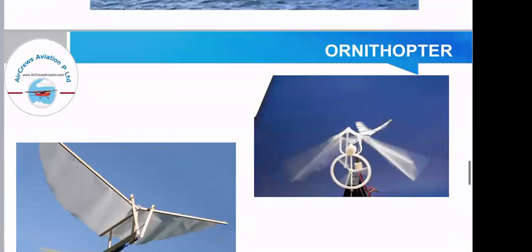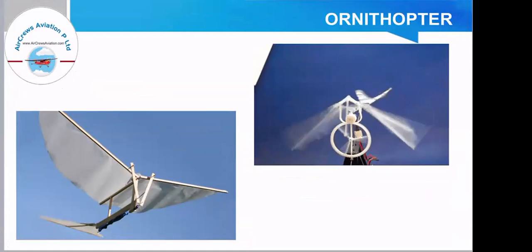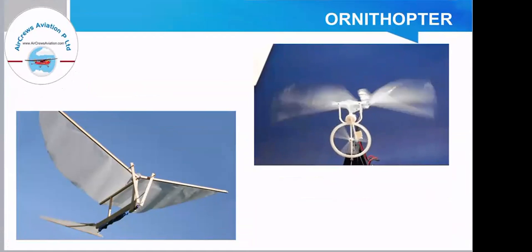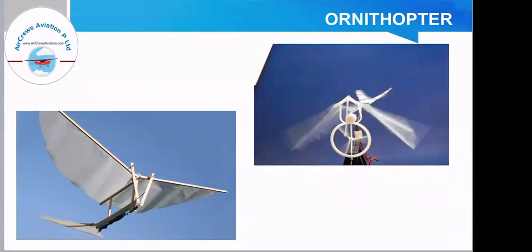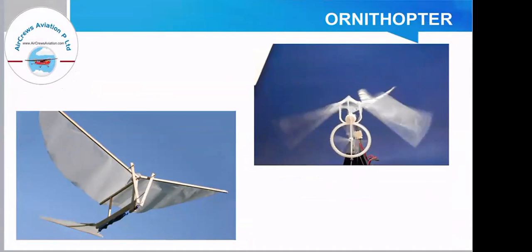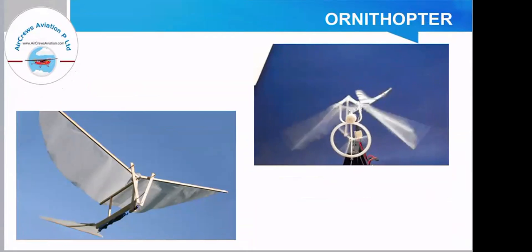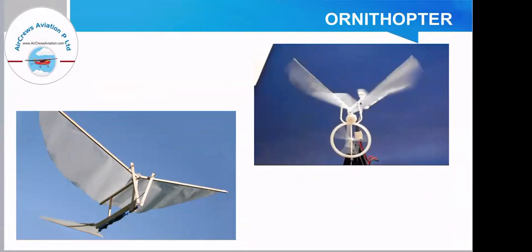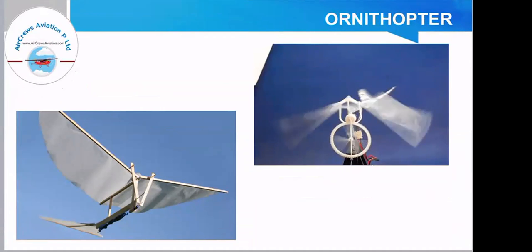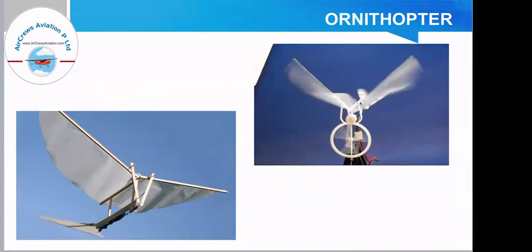The next type is the ornithopter. These were early aircraft that use the concept of flapping wings. This design concept came from birds, insects, or bats — while they fly with the flapping of wings, the same concept of design was originated, and hence the ornithopter was made.